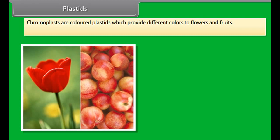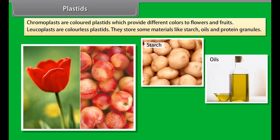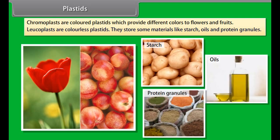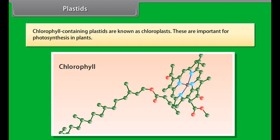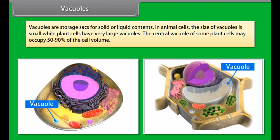Mitochondria are known as the powerhouses of the cell because they generate and provide energy in the form of ATP (adenosine triphosphate) to the cell to perform various chemical activities. ATP is known as the energy currency of the cell. Mitochondria contain two membrane coverings; the outer membrane has many pores on it, while the inner membrane has many folds. These folds are known as cristae.